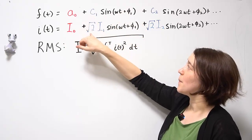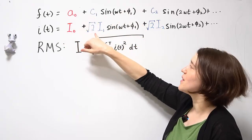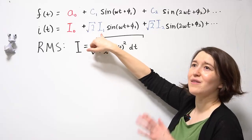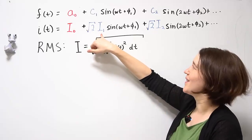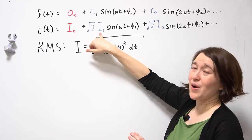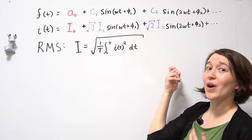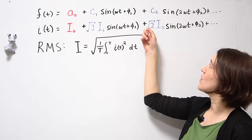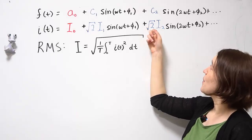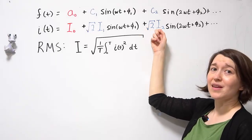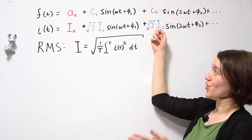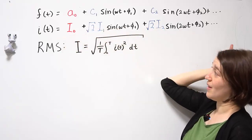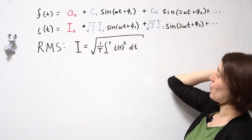So C1 will become square root of 2 times the RMS value of the fundamental component. So that's I1. And then the same pattern for all the higher coefficients. It's going to be square root of 2 times the RMS value of the n equals 2 term for the waveform. So that continues all the way up to infinity.